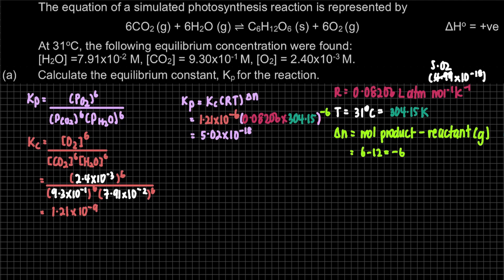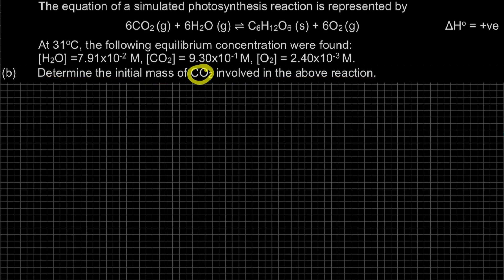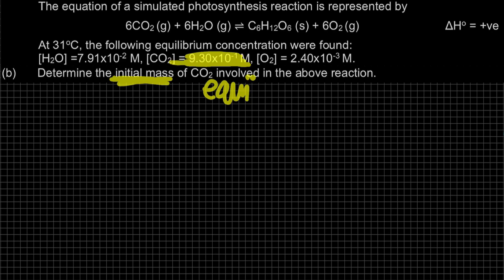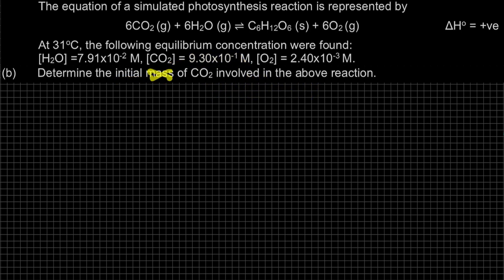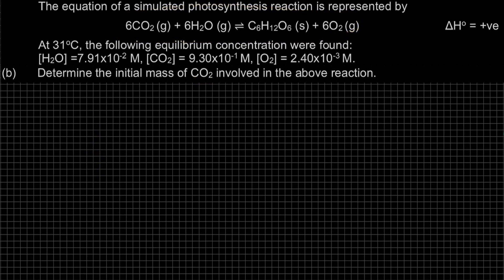That covers question A. For question B, we must determine the initial mass of CO₂ involved in the reaction. CO₂ is a reactant, so we need its initial value. Since we only have equilibrium concentrations, we need to construct an ICE table — Initial, Change, Equilibrium — to find the initial concentration of CO₂.